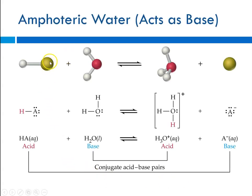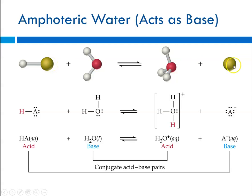As a general formula, consider an acid HA interacting with water. Here water is acting as a base, accepting the proton, going from H2O to H3O+, forming the hydronium ion, and what remains is the anion A-. The acid HA and A- are a conjugate acid-base pair — the acid has one more hydrogen than its conjugate base — and water acting as a base has a conjugate acid with one more proton.